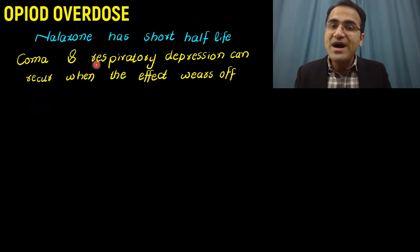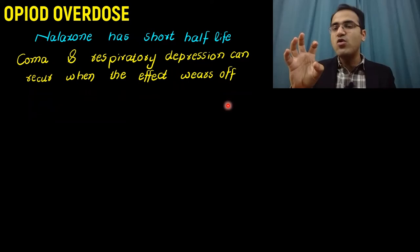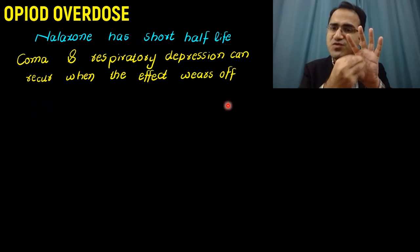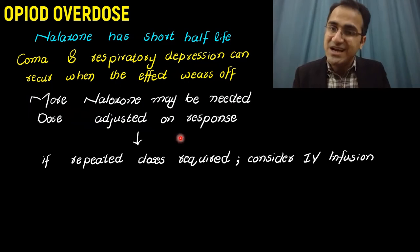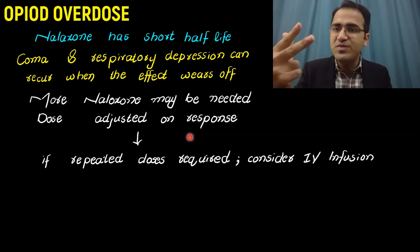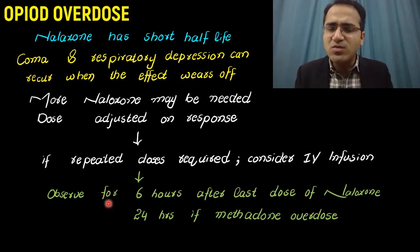Remember that naloxone has a short half-life. Coma and respiratory depression can recur when the effect of naloxone wears off — the patient may improve initially, then deteriorate again. In such cases, more naloxone may be needed. Dose is adjusted according to response in coma scale, respiratory rate, and pupil size. If repeated doses are required, start an IV infusion of naloxone.